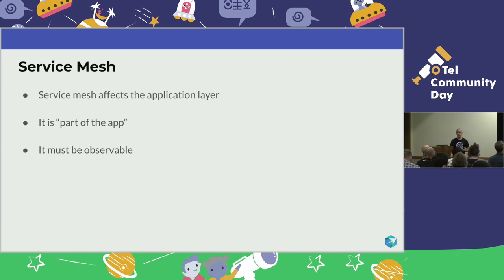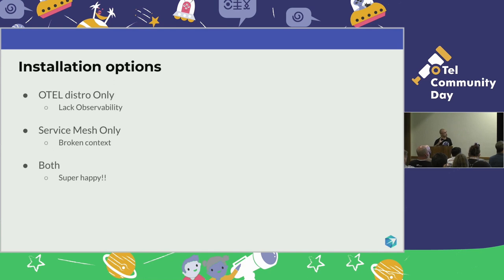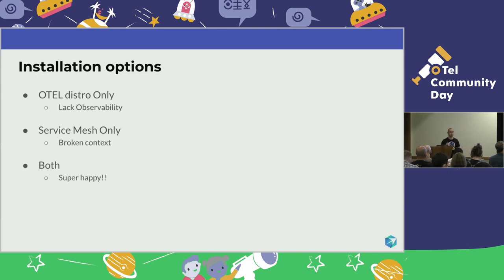To sum up the options for telemetry as a whole: you can just implement an OpenTelemetry distro, which probably gives you around 90% of what you're looking for — and that's great. If you only go with service mesh, you're left with broken context, which won't take you very far. If you have both, you'll be very happy.